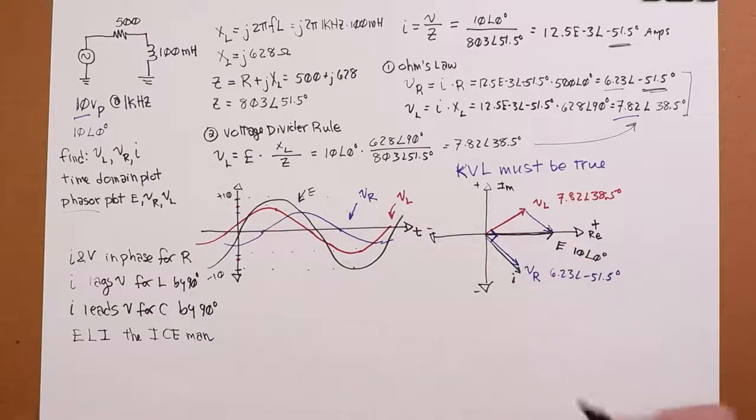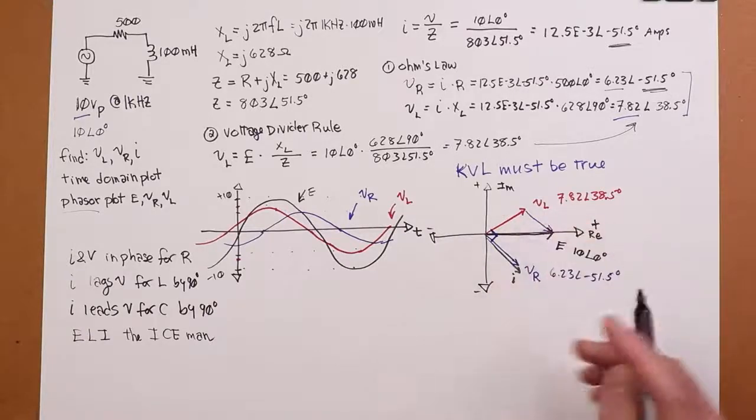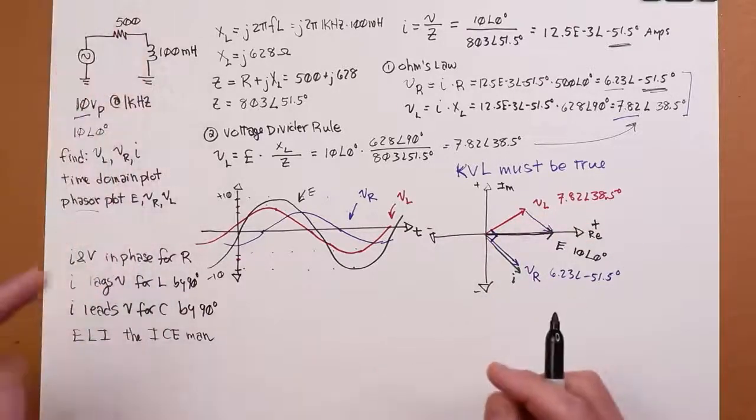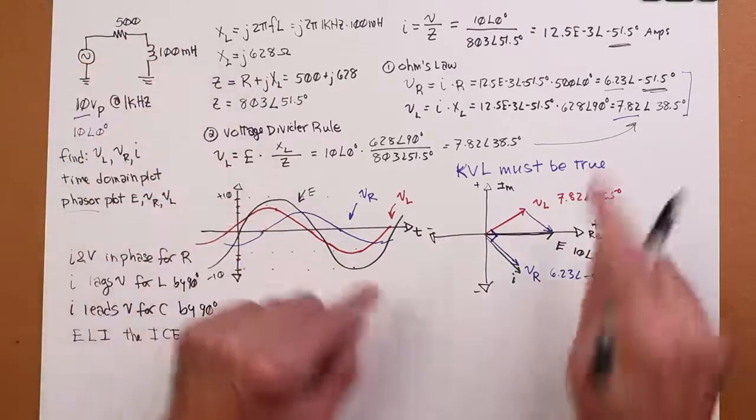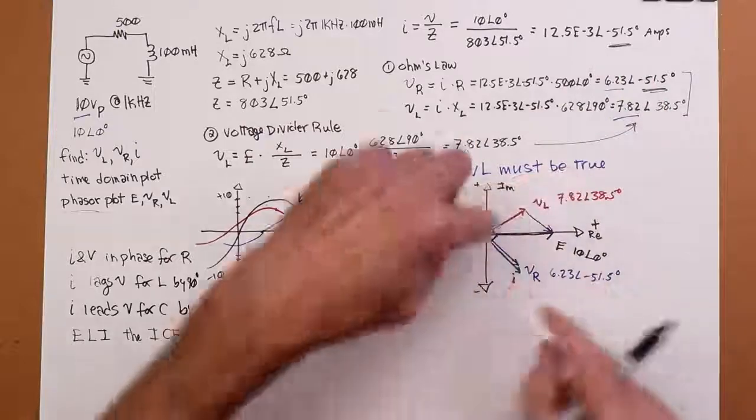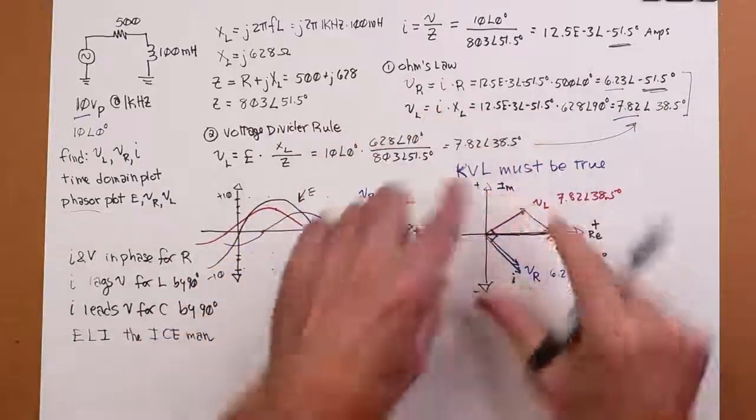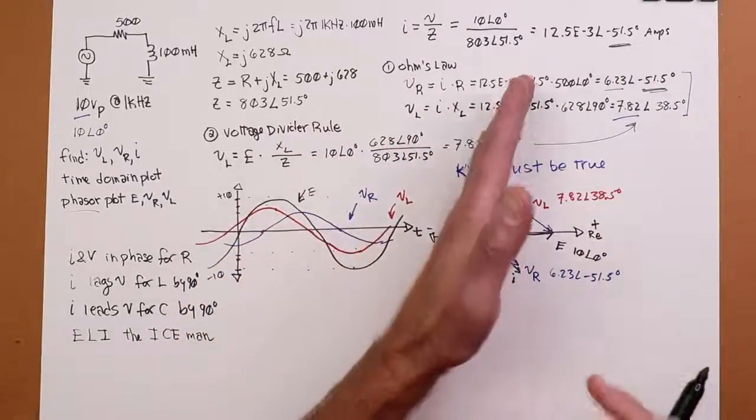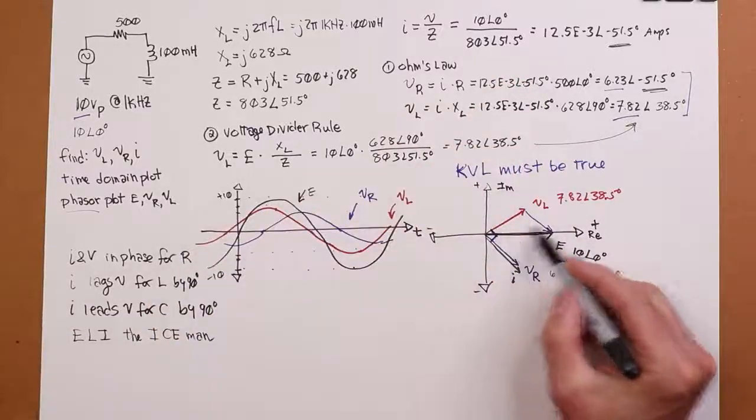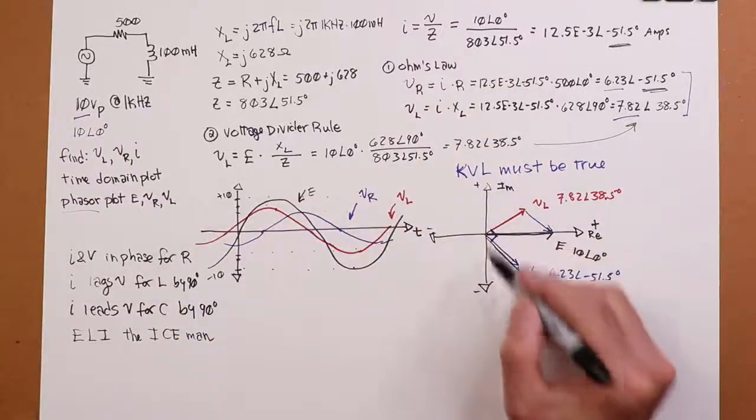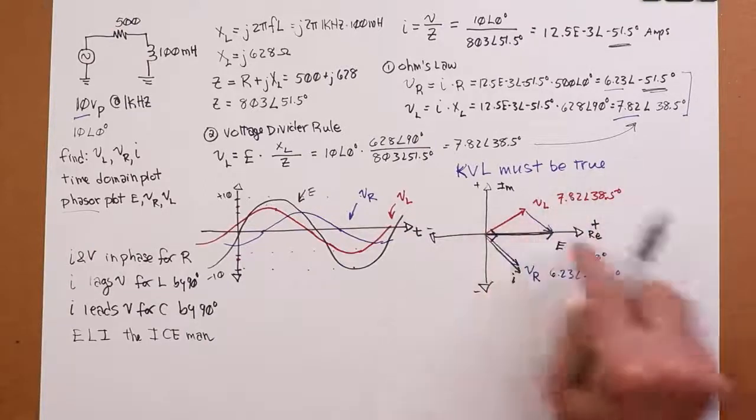So, that's what we're looking at here. That'll always be the case. If you change the values, if we were to change the frequency, for example, and, you know, x of L would change, obviously the current changes, the angles change. So, this whole thing might rotate one way or the other. In other words, the VL might be up like this, and then the VR would be flatter, or the VL would be flatter, and the VR would be down more, but there's always going to be a right angle in there.